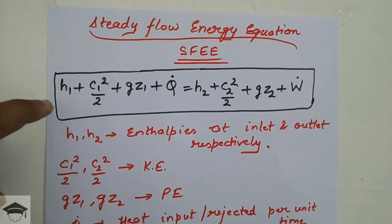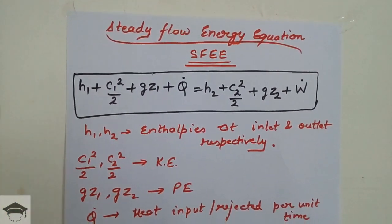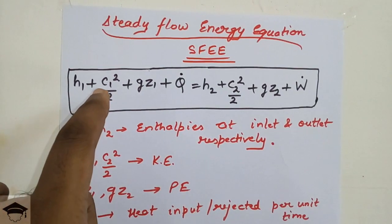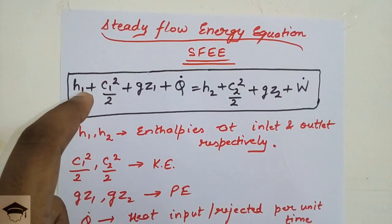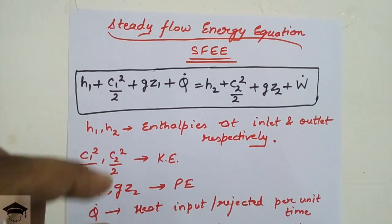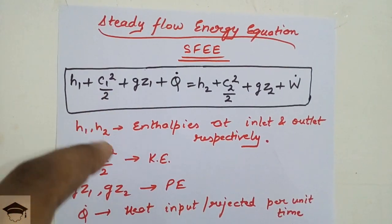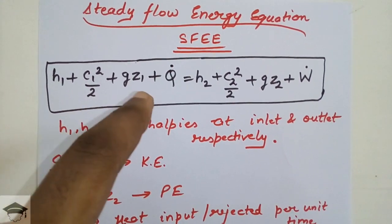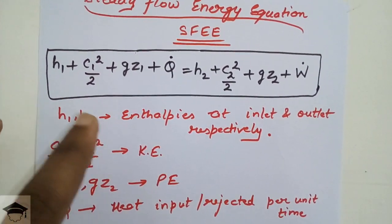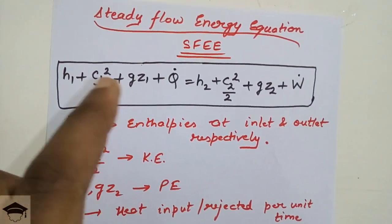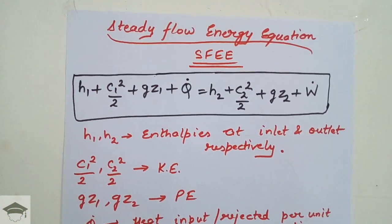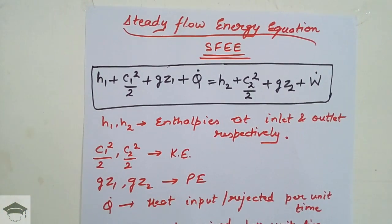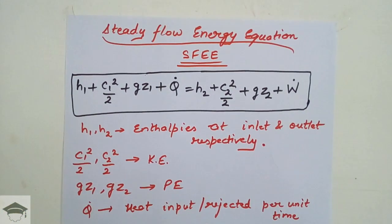One more thing: since the mass flow rate is constant throughout, the mass term cancels from both sides. Do not be confused — the kinetic energy term is mc1² / 2 and the potential energy is mgz1, but since mass flow rate is the same on both sides, the equation is written per unit mass.